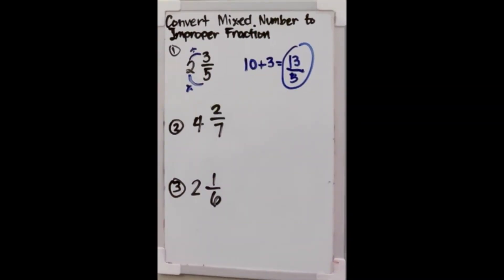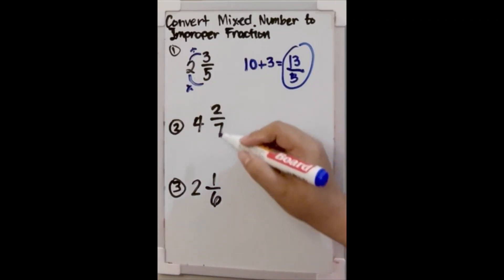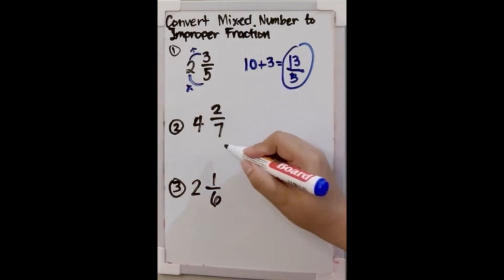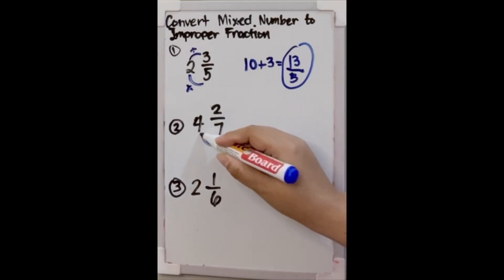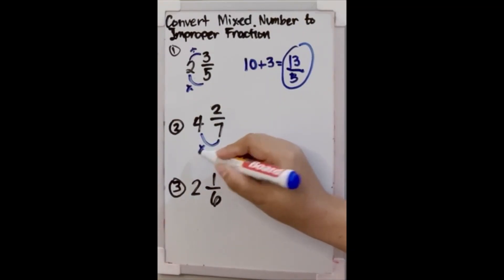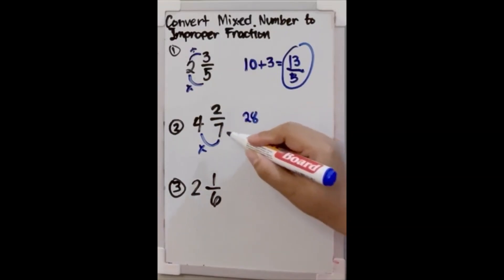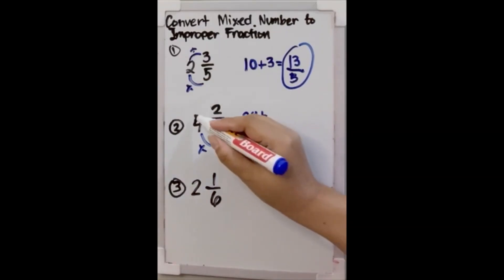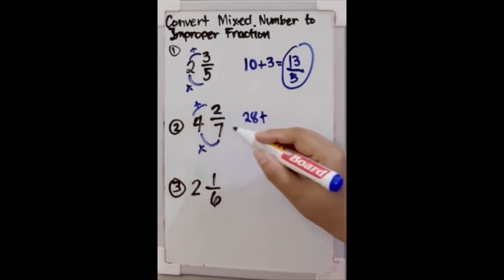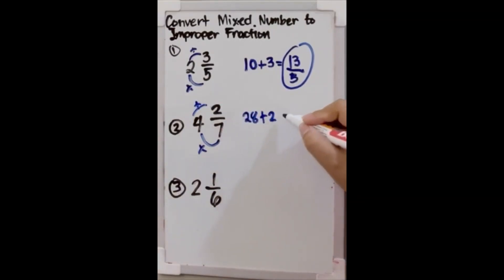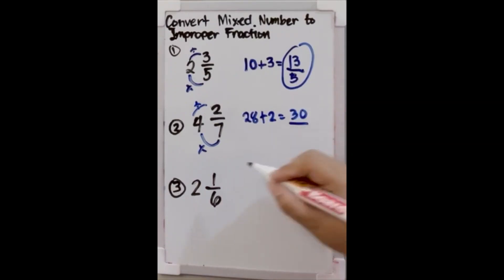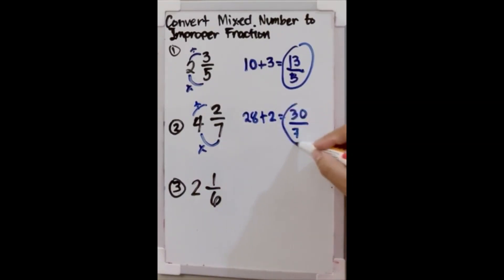The next example is 4 and 2 over 7. Just like the first example, we multiply the denominator 7 by the whole number 4: 7 times 4 is 28. Then add the numerator 2: 28 plus 2 is 30. Just copy the denominator 7, so the answer is 30 over 7.